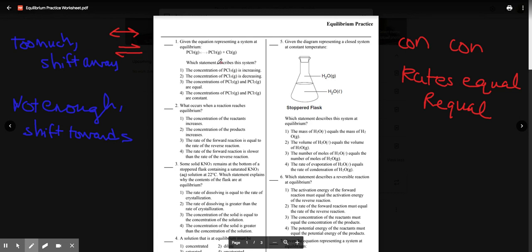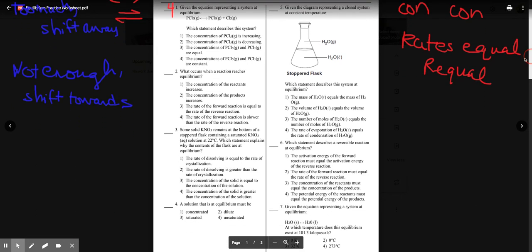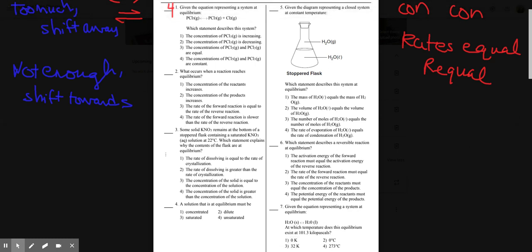So those might help too. So if you're at equilibrium, concentration must be constant, choice four. What occurs when a reaction is at equilibrium? Concentrations increase of reactants, products, the rates are equal. Hey, that's our answer. Choice three.